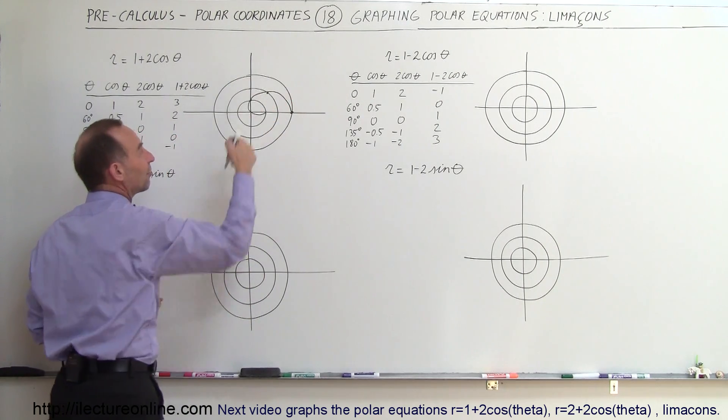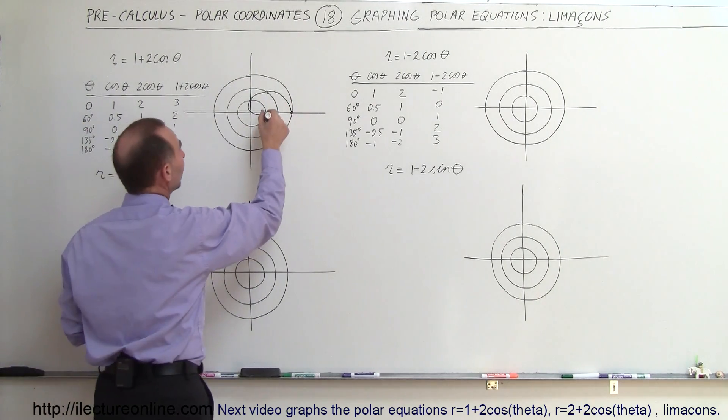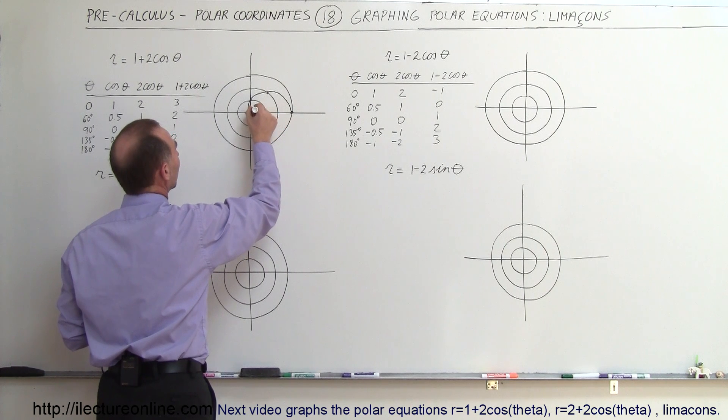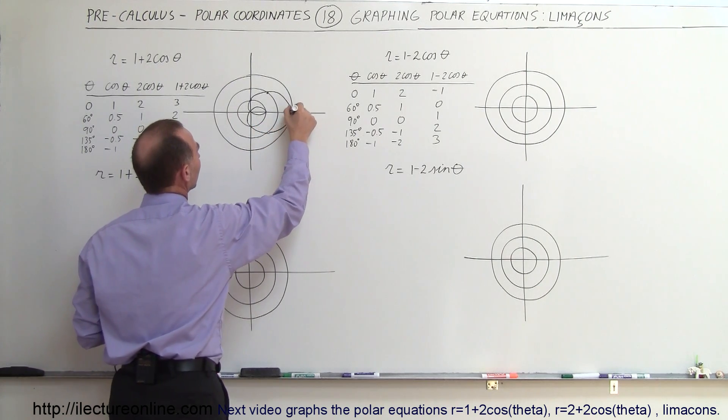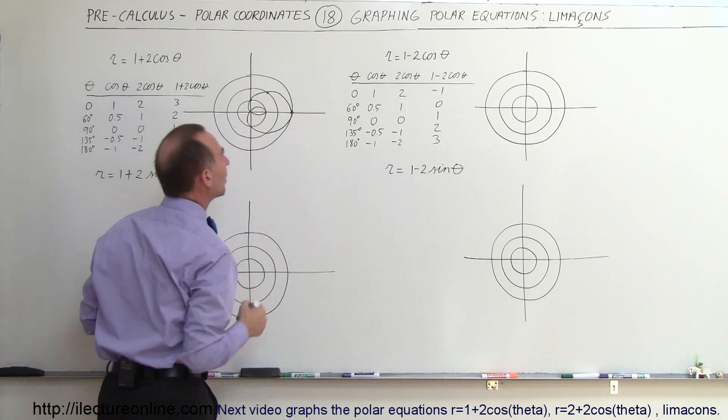All right, so there's the initial graph. We've then continued that. We can see that because of symmetry, it will look like this, and come around through here, coming around through here, and then back over here. So that's a typical limaçon.